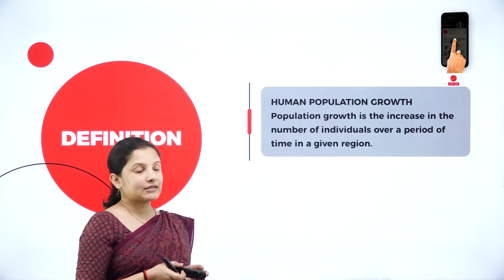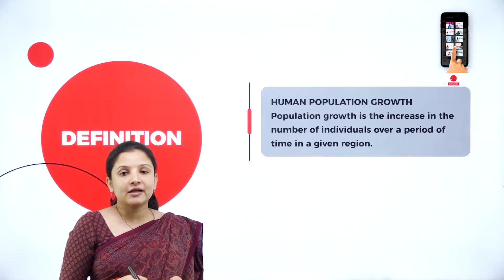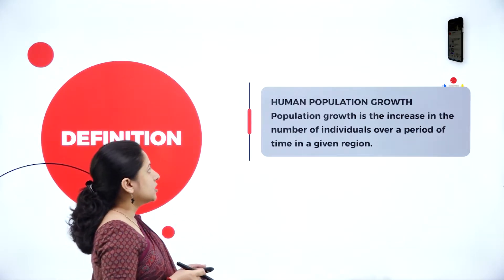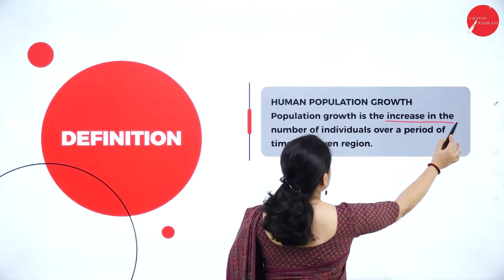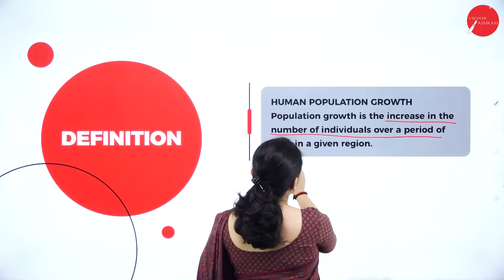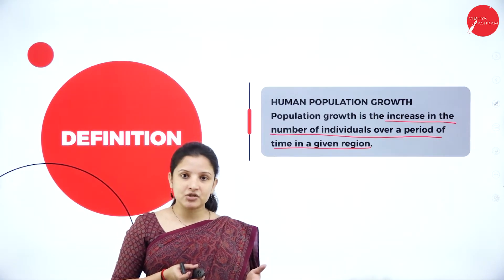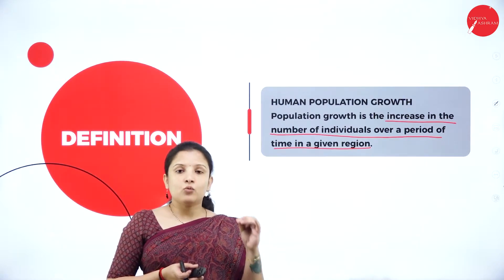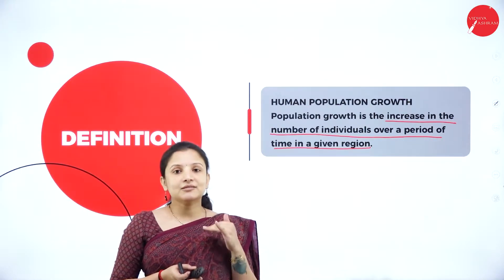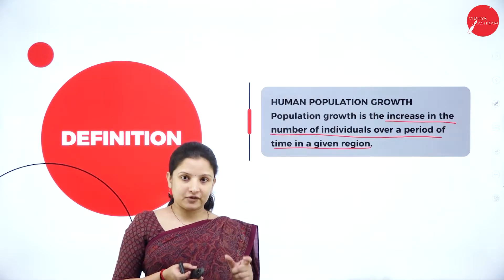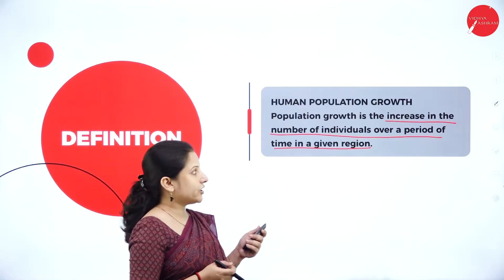Let us learn about human population growth and how it affects different aspects of the environment. Population growth is the increase in the number of individuals over a period of time in a given region. For example, every year a census is conducted — measuring the increase in population from one year to the next is called population growth.